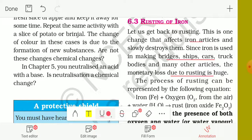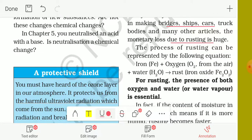The process of rusting can be represented by the following equation. Iron, that is Fe, plus oxygen O2 from air.